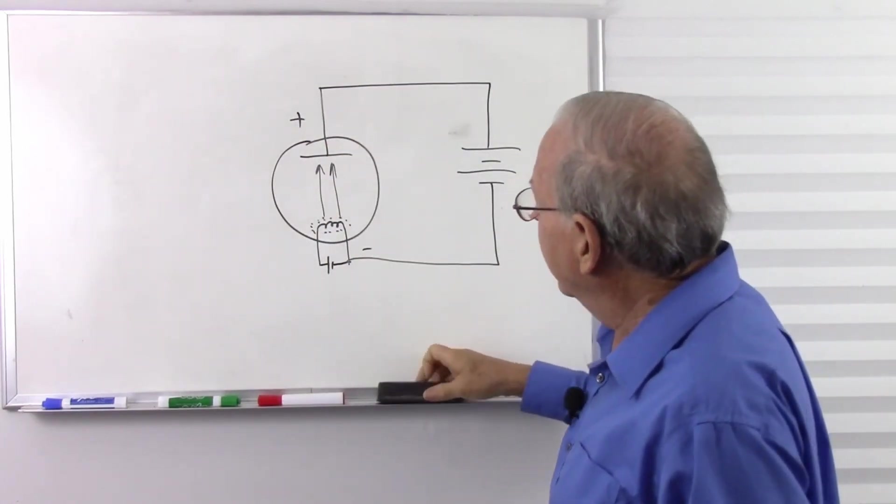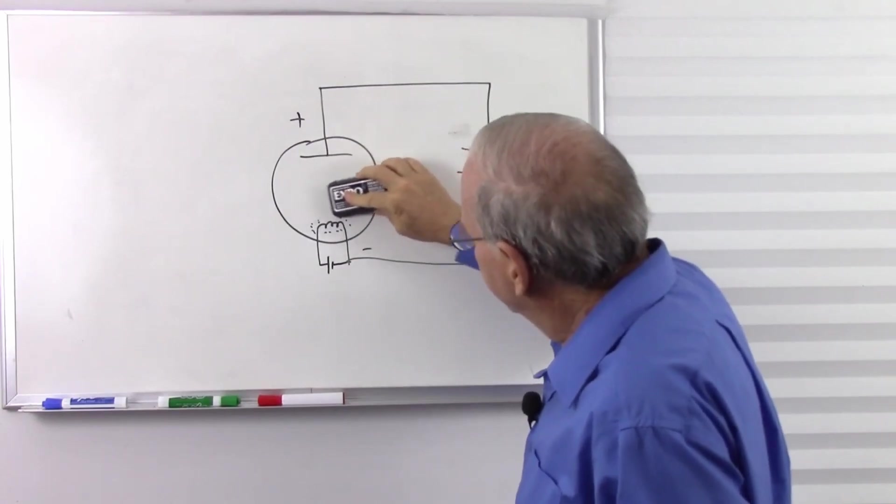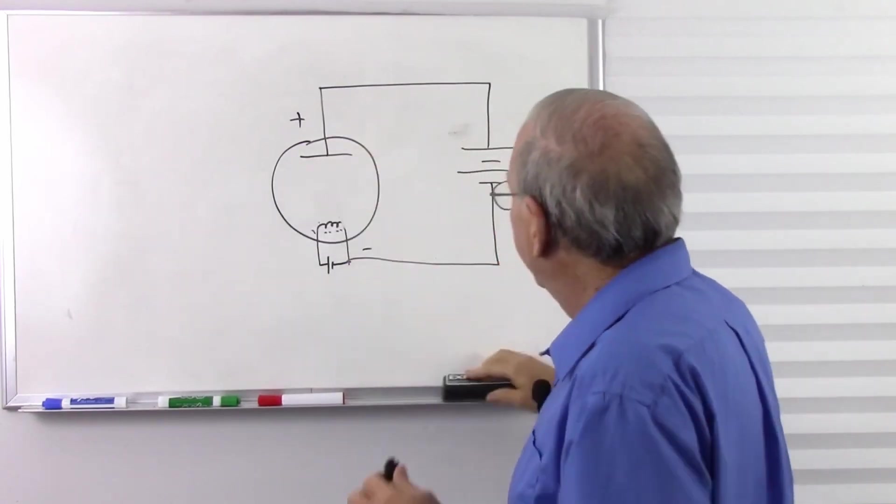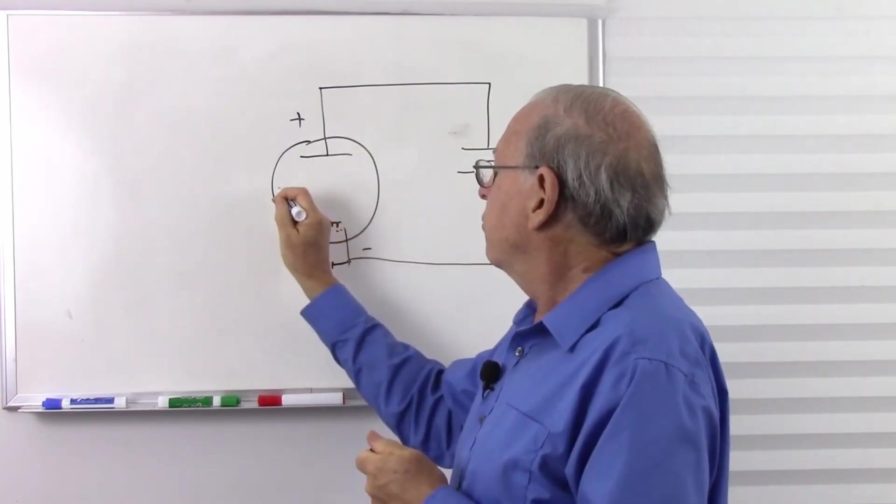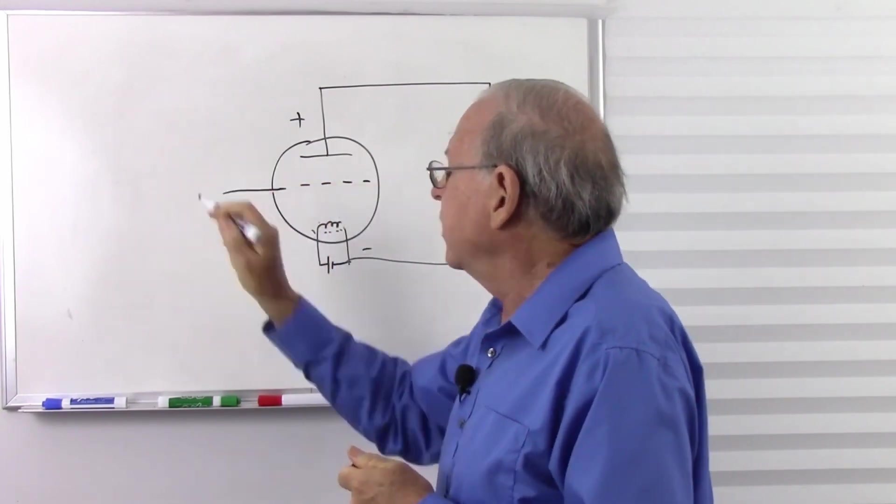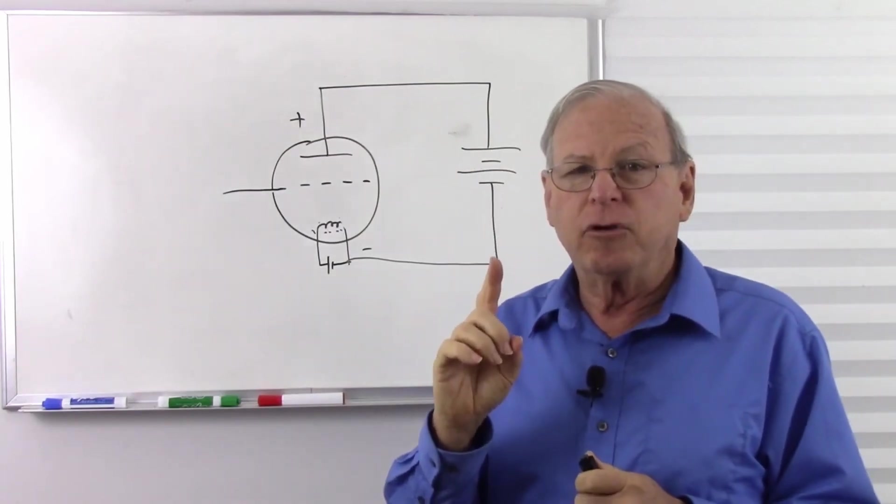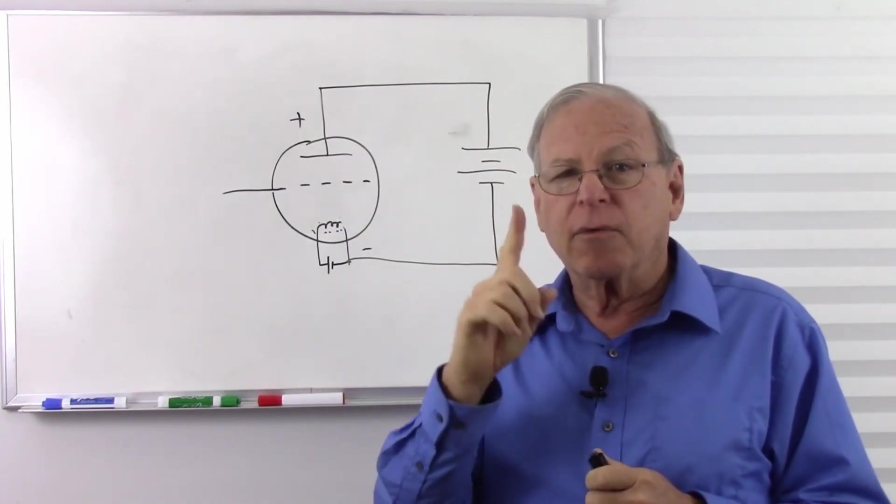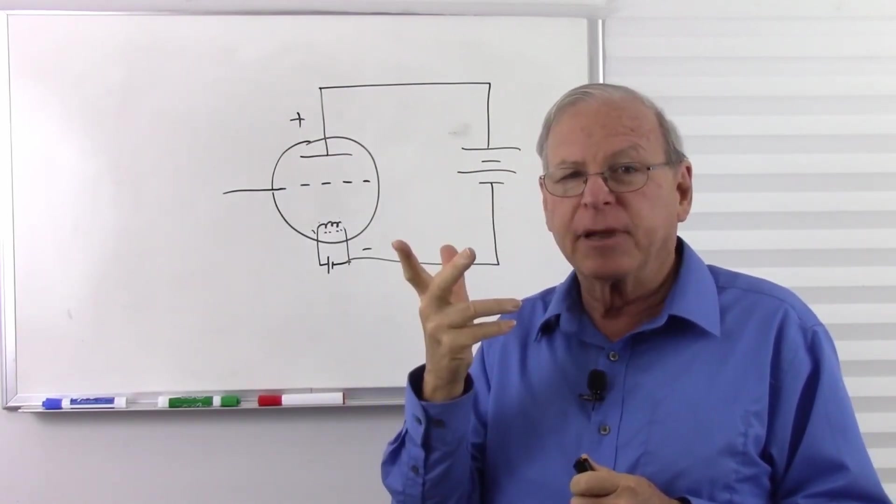Now let's turn this into a triode, which can amplify. So let's get our clutter out of the way here. And we're going to put a control grid inside there. In schematics it's drawn as a dashed line connected to the outside. In a real vacuum tube, basically it's a spiral of wire around the filament between the filament and the plate.